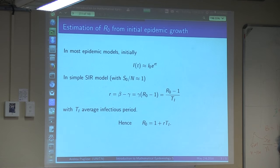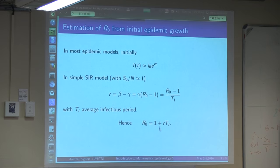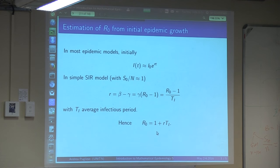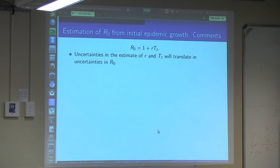So eventually you can write r as (R0 minus 1) divided by the average infectious period. This is a very simple observation. The idea is that often you can estimate little r from data. Once you have estimated little r from data, you can use this formula in reverse and say R0 is 1 plus r times T_I. This assumes you have estimated r and know the average infectious period.